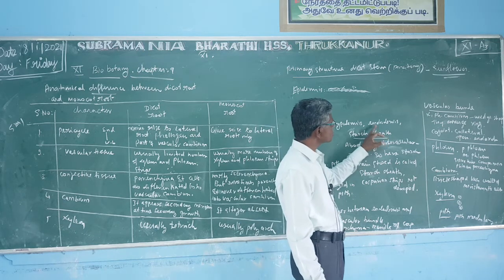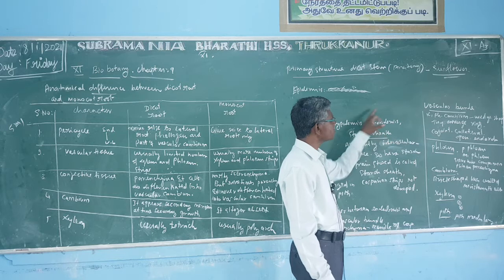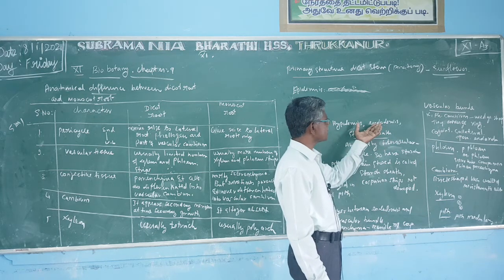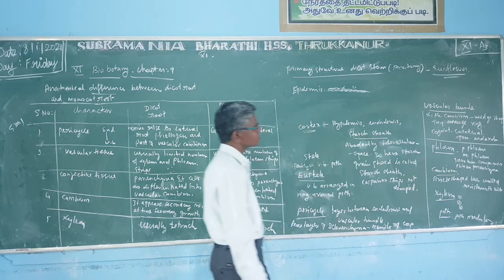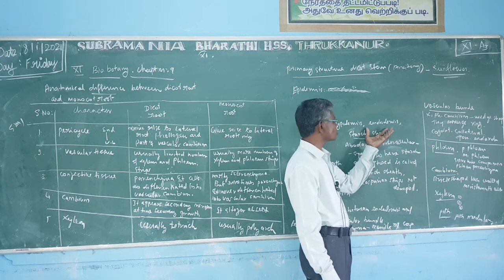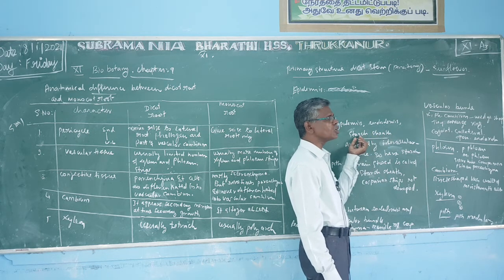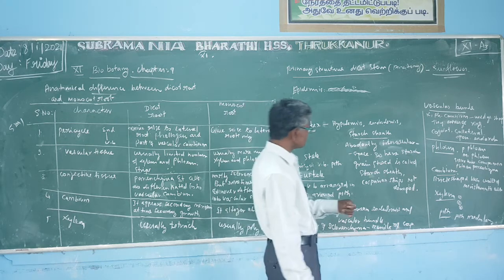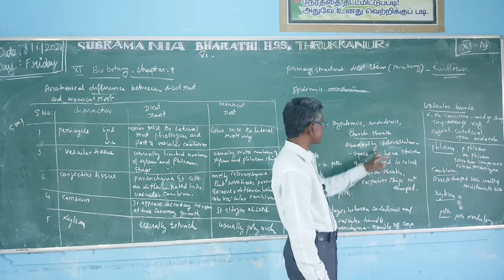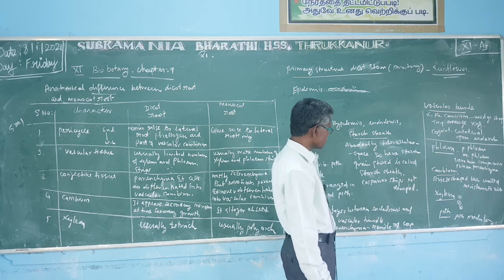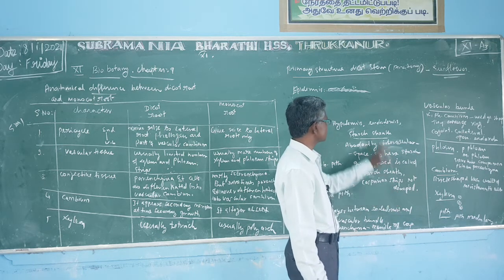Then the endodermis — a single layer of barrel-shaped parenchyma tissue. In the endodermis, intercellular space is available and starch grains are stored there, which is called the starch sheath. In the dicot stem, starch is abundantly present in the endodermis intercellular space. Casparian strips are not developed in the endodermis of dicot stem.